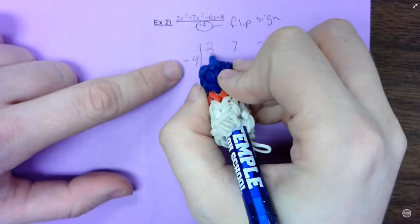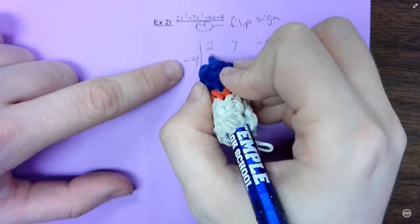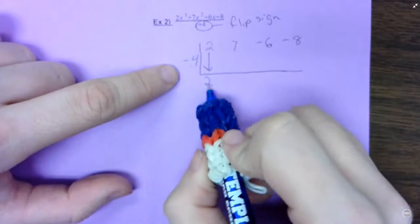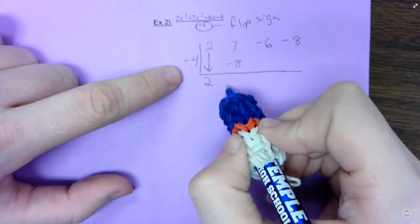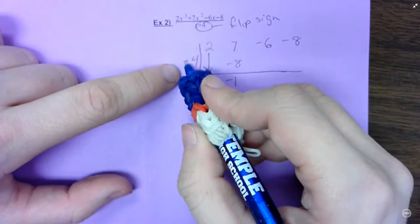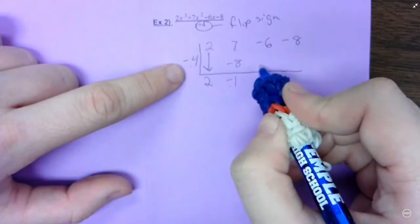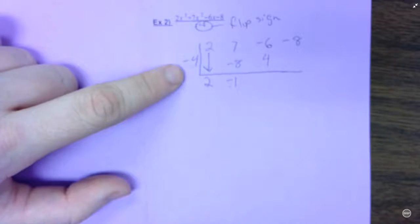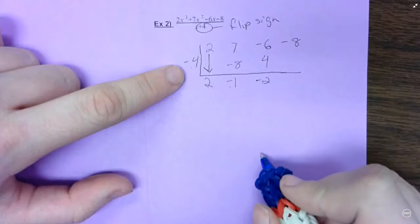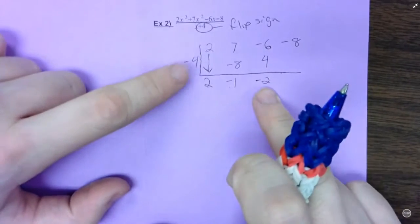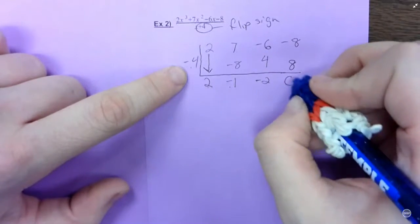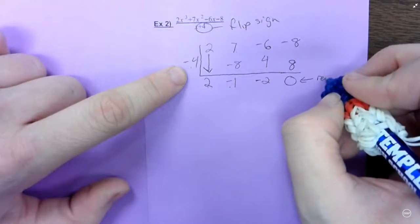And the first thing you do is, see if you can remember, bring down the 2. Negative 4 times 2 is negative 8. Write that in the next spot. 7 minus 8 is negative 1. Negative 4 times negative 1 is 4. Write that in the next spot. Negative 6 plus 4 is negative 2. Again, multiply negative 4 times negative 2 is 8. Write that in the next spot. And negative 8 plus 8 is 0. So again, I have remainder 0.